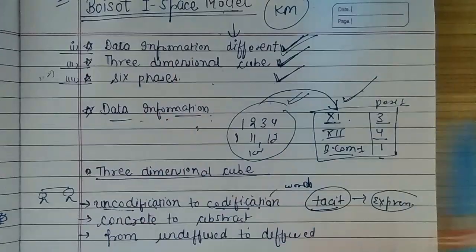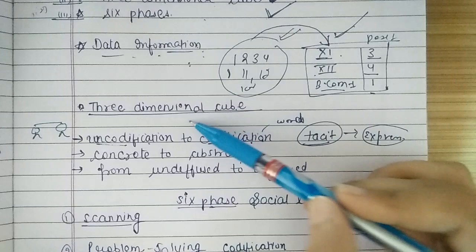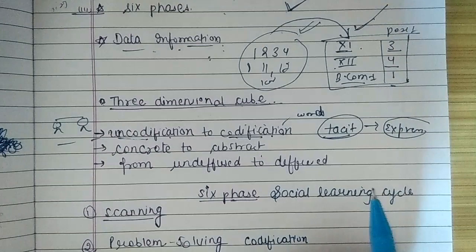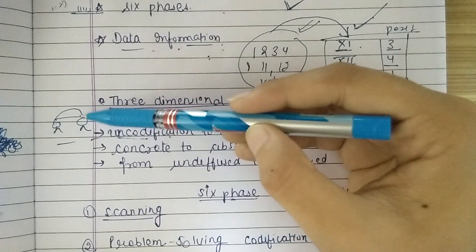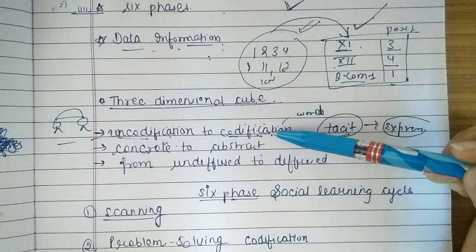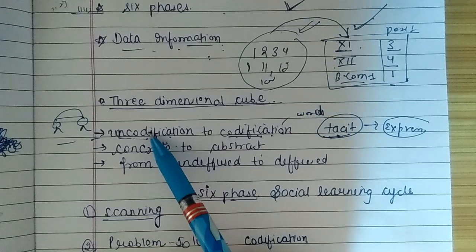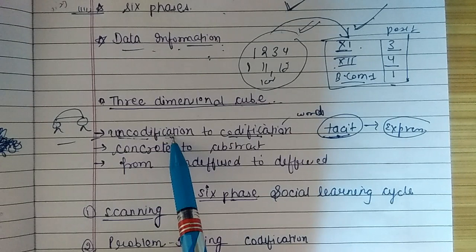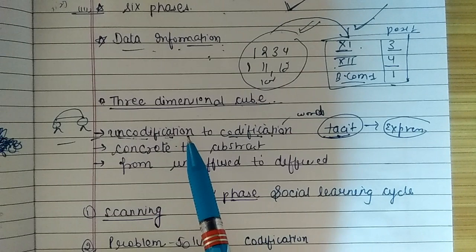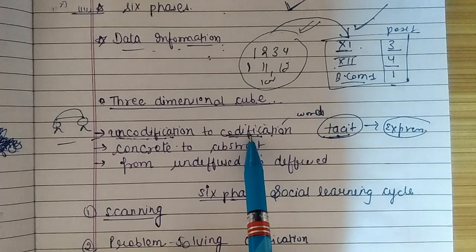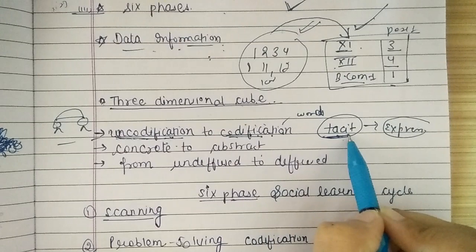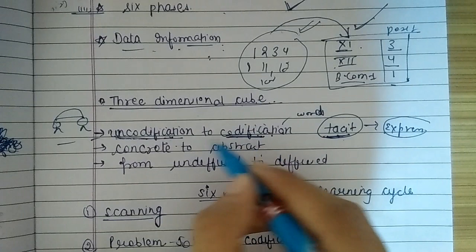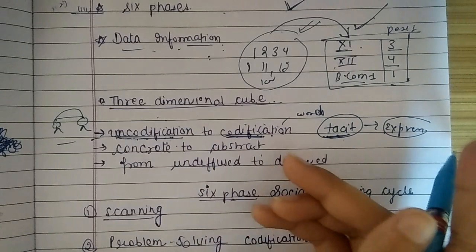The second thing this model discusses is the three-dimensional cube. One dimension is uncodification to codification. This means a person first has tacit knowledge — knowledge in his mind that is uncodified. Codification means expressing something using words or images. When a person learns something, it starts as uncodified — meaning it exists only in his mind. When he expresses it to another person using words or images, it becomes codified. So uncodification to codification means moving from knowledge in the mind to expressing it in words.